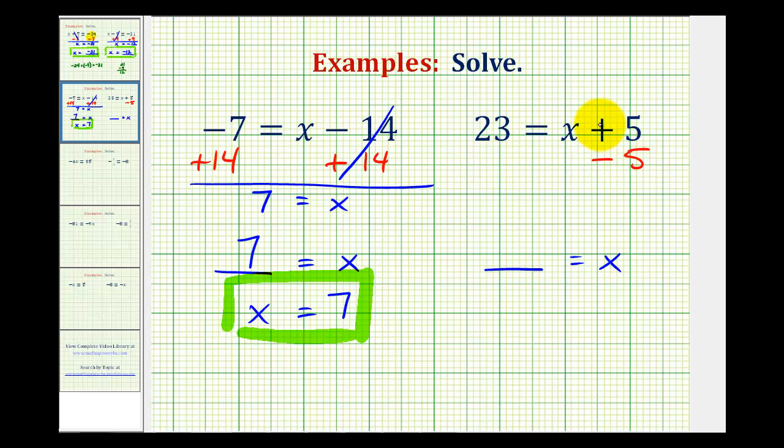So we can subtract 5 on the right as long as we subtract 5 on the left. Plus 5 minus 5 is zero, so we're left with x on the right, and then on the left we have 23 minus 5, which is equal to 18. So the solution is 18 equals x, but this is normally reversed and written as x equals 18.